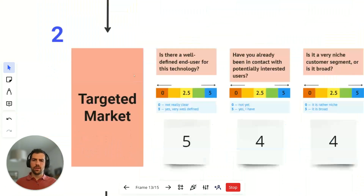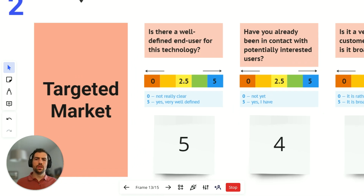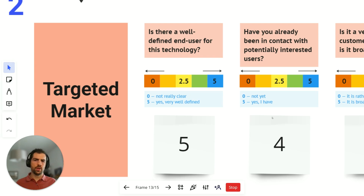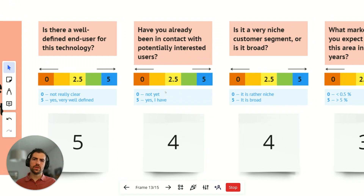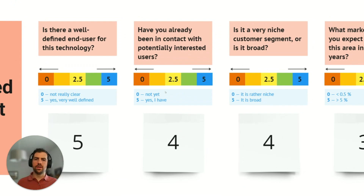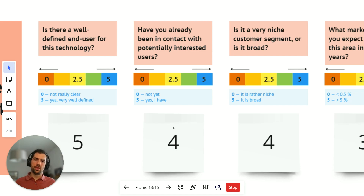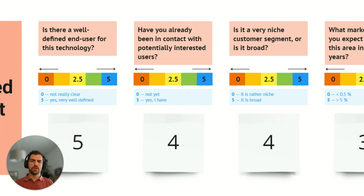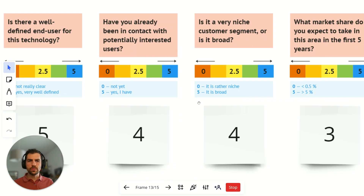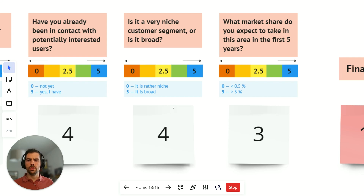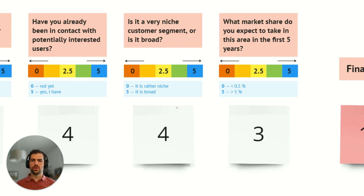Now let's jump to the second section: the targeted market. 'Is there a well-defined end user for this technology?' — zero is not really clear, five is yes, very well defined. In this case it's very well defined; they knew who they were targeting. 'Have you already been in contact with potential users?' — we assume they had contact with educational institutions, so we've given it a four. 'Is it a niche segment or broad?' — here it's quite versatile across different sectors, so we've given it a four.